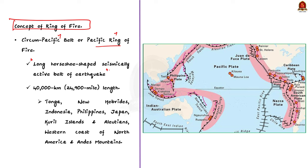For much of its 40,000 kilometer length, the Ring of Fire follows a chain of island arcs such as Tonga, New Hebrides, the Indonesian Archipelago, Philippines, Japan and Kuril Islands. It also has other arc-shaped geomorphic features such as the western coast of North America and the Andes Mountains. Most of the world's strongest earthquakes and approximately 75% of the world's volcanoes occur along and within the Pacific Ring of Fire.